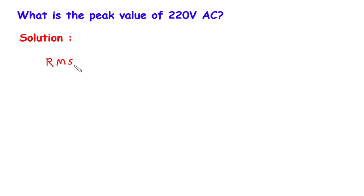RMS, that is root mean square voltage value, is given which is 220V. Now what we have to find? We have to find the peak value of this RMS voltage.